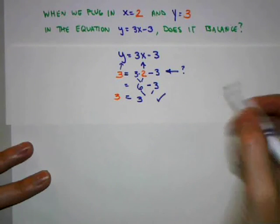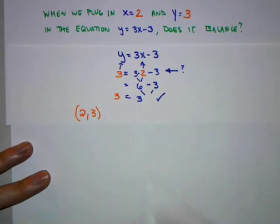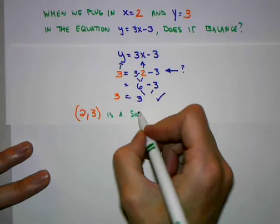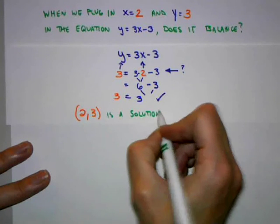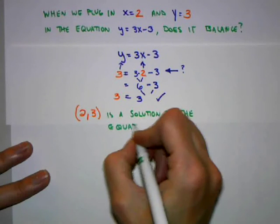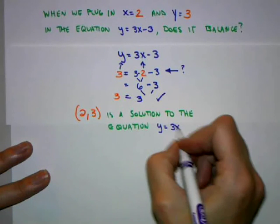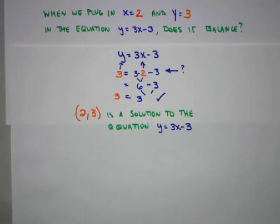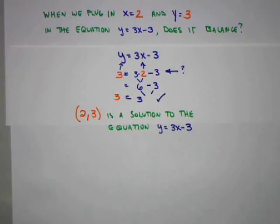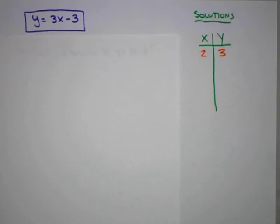What does this mean? This means that the point (2,3) is a solution to the equation y = 3x - 3. That's what it means to say that a point is a solution to an equation. We found one solution to the equation y = 3x - 3, and that was the point (2,3).